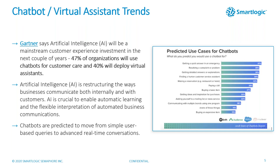Looking at 2018 data on what people would use a chatbot for: getting a quick answer in an emergency, resolving a complaint, getting detailed answers or explanations — simple but very commonly asked requests. In the front office that's a customer talking to you; in the back office it might be a staff member referring to an HR portal or policy. As chatbots become more advanced, their use cases are expected to get more sophisticated.